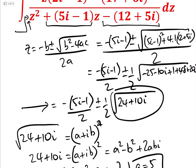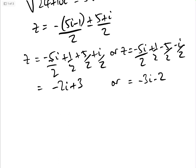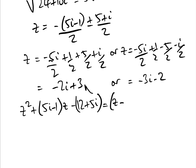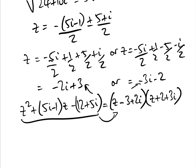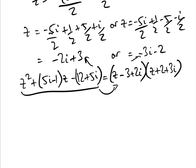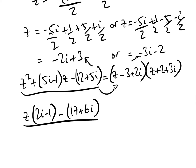Remember, all we're doing at the moment is factorising the bottom so that we can split it into partial fractions. So we finally have that Z squared add (5I minus 1)Z minus (12 add 5I) equals (Z minus (3 add 2I)) times (Z plus (2 plus 3I)). We've factorised the quadratic. So now what we can do is begin to put it into partial fractions, setting Z(2I minus 1) minus 17 add 6I over (Z minus (3 add 2I))(Z add (2 add 3I)). We're now going to put it as partial fractions.